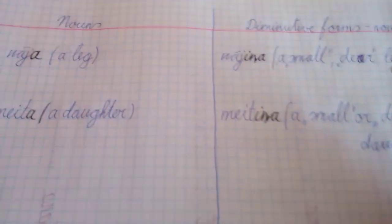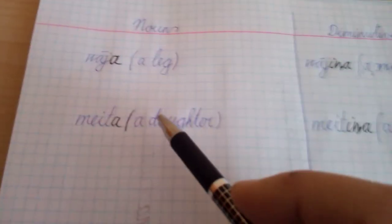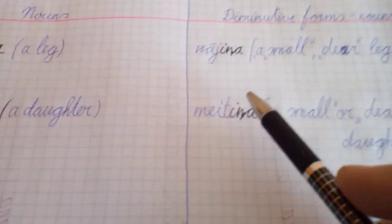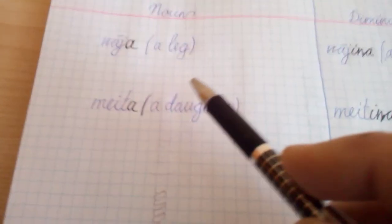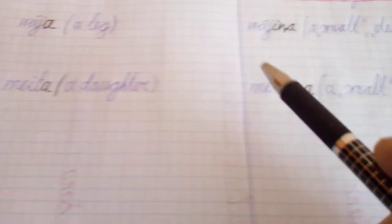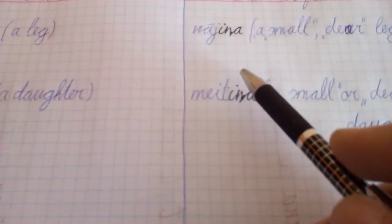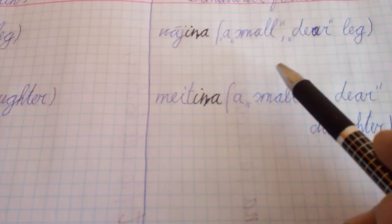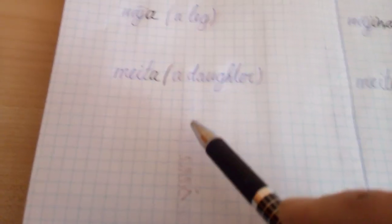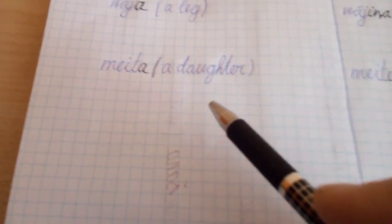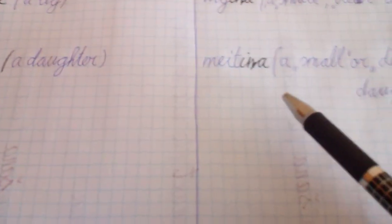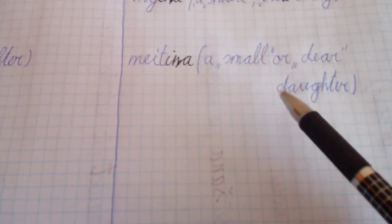Nouns, diminutive forms of nouns. Kāja, a leg. Kāja, a leg - not māja, which is a house. Kājiņa, a small dear leg. Maita, a daughter. Maitiņa, a small or dear daughter.